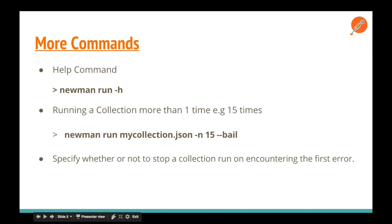More commands worth exploring: use newman run -h to get the help command, which shows lots of different available options. Use -n followed by a number if you want to run the collection a specific number of times — for example, 15 times. Use --bail to stop the collection run whenever it encounters an error. Make sure you use --bail wisely.